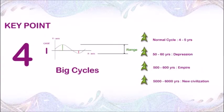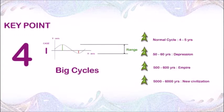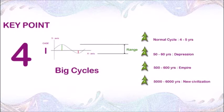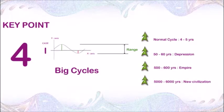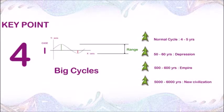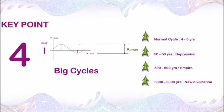Point number 4: Bigger cycles can bring big changes. A normal business cycle is of 4 to 5 years. It gives rise to 50 to 60 year cycles which bring a huge change like great depression, change in world reserve currency, etc.